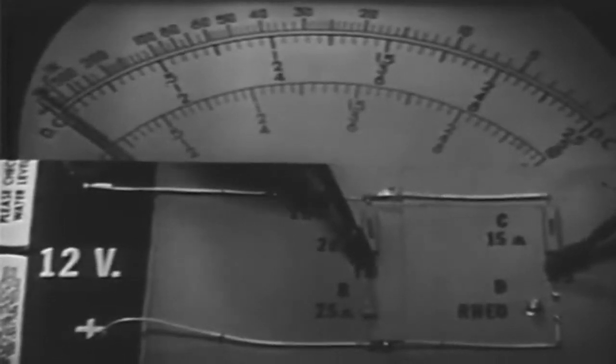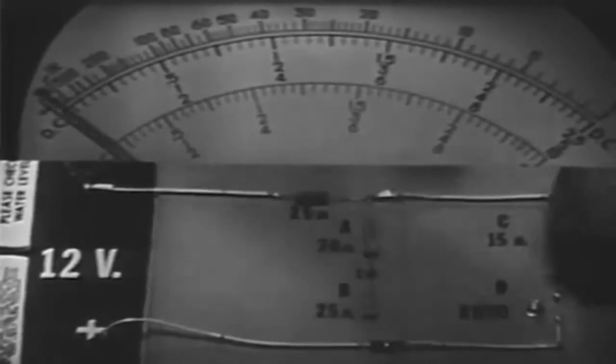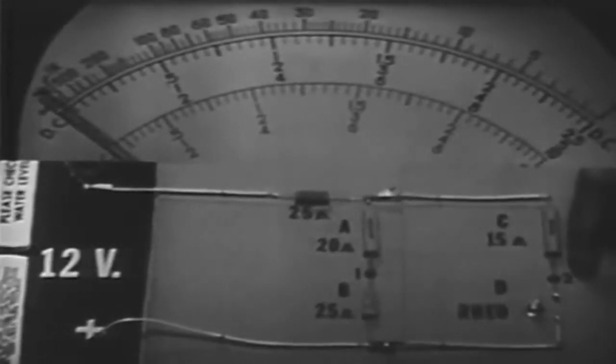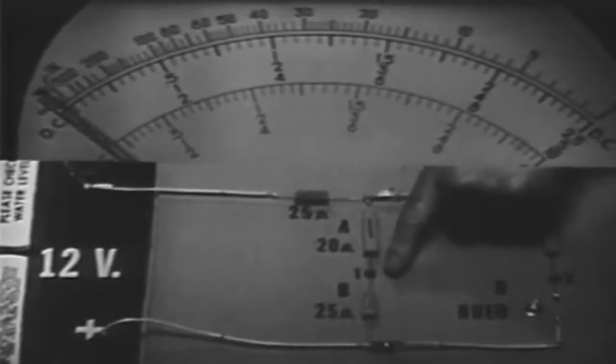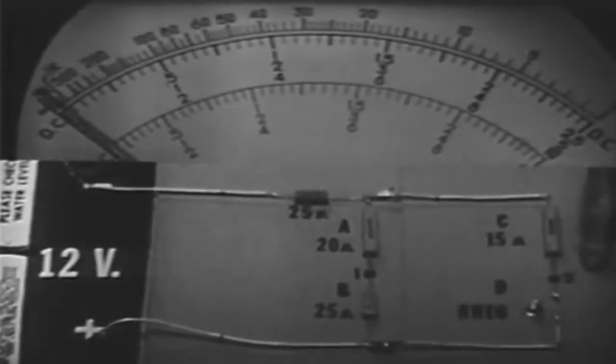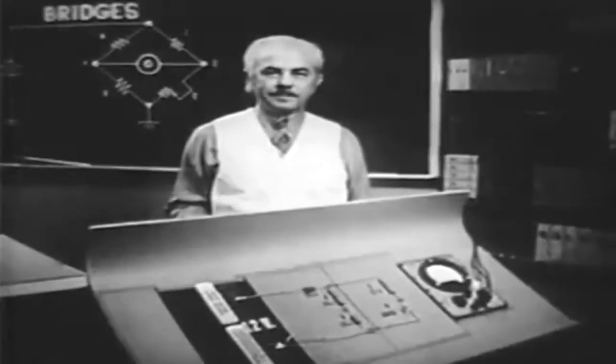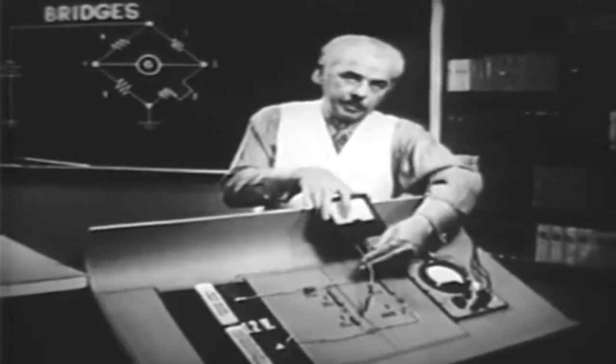We measure from point 1 to point 2, and we get a zero indication. Since we have no difference in potential, we should be able to place a conductor between points 1 and 2 and have no current through the conductor.